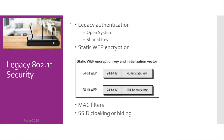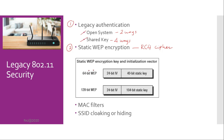Legacy 802.11 Security. Open system authentication provides authentication without performing any type of user verification. It is essentially a two-way exchange between the client radio and the access point. Shared key authentication was a four-way authentication frame handshake. Wired Equivalent Privacy, or WEP, is a layer 2 encryption method that uses the RC4 streaming cipher. The original 802.11 standard initially only defined 64-bit WEP as a supported encryption method. Shortly thereafter, 128-bit WEP was also defined as a supported encryption process.